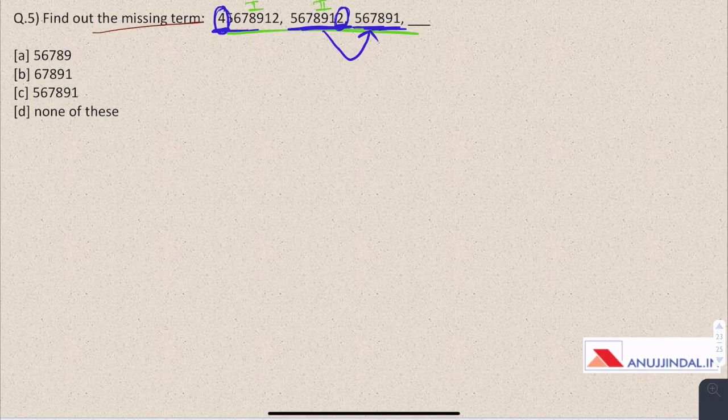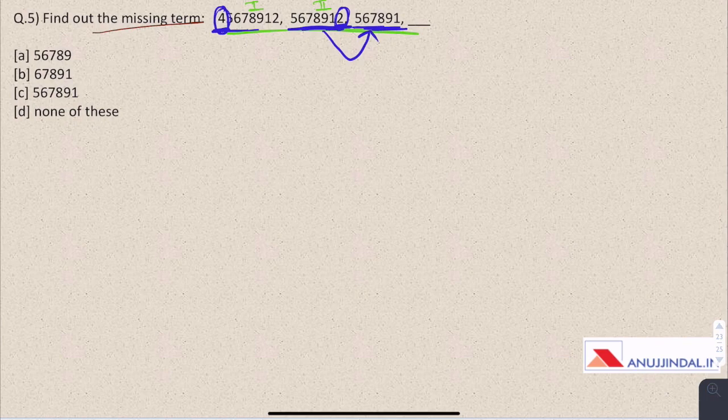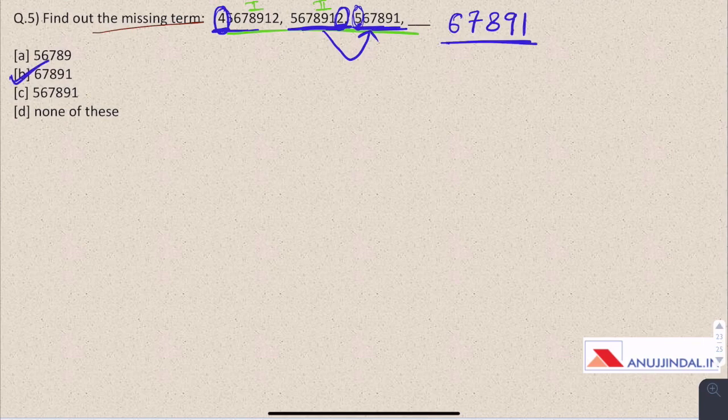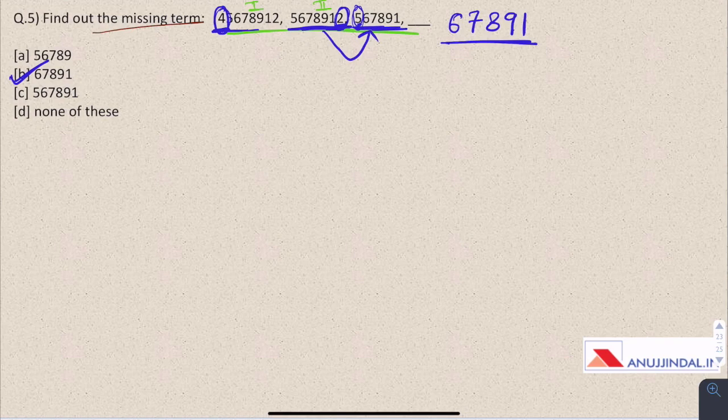So to get the third number we have removed one digit from right, so to get the next digit we'll have to remove this 5, which is one digit from left. So the next digit would be 67891. B is the answer. See, this question was having no maths to do but just a simple observation could help you in the long run to solve such questions in a very little time.